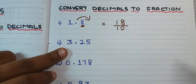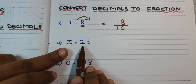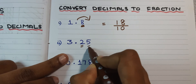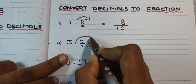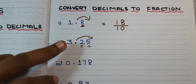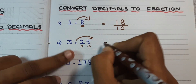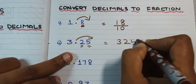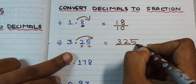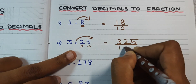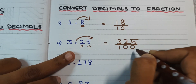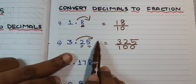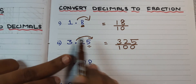One digit means one zero. Next: 3.25 — how many digits after the decimal? Two digits. If I want to remove the decimal point I need two zeros, so the answer is 325 divided by 100. Moving the decimal point after two digits means I place two zeros. One digit means one zero.